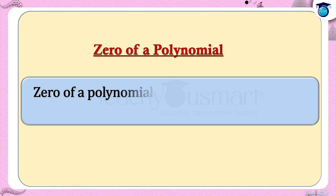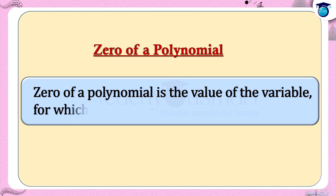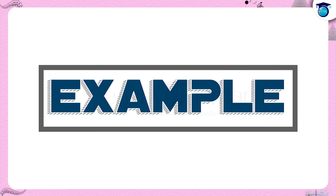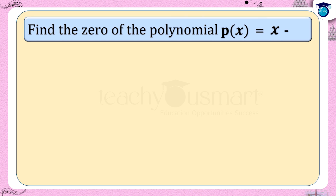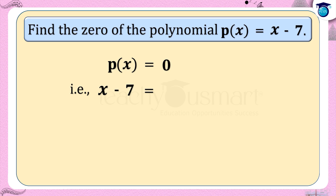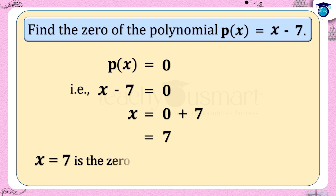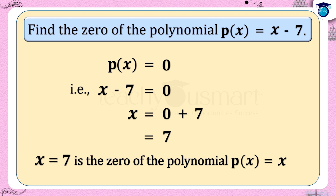Now let's find the zero of the polynomial p(x) = x minus 7. For finding the zero of a polynomial, equate that polynomial to zero. That is x minus 7 = 0, so x = 0 + 7 = 7. Therefore x equals 7 is the zero of the polynomial p(x) = x minus 7.